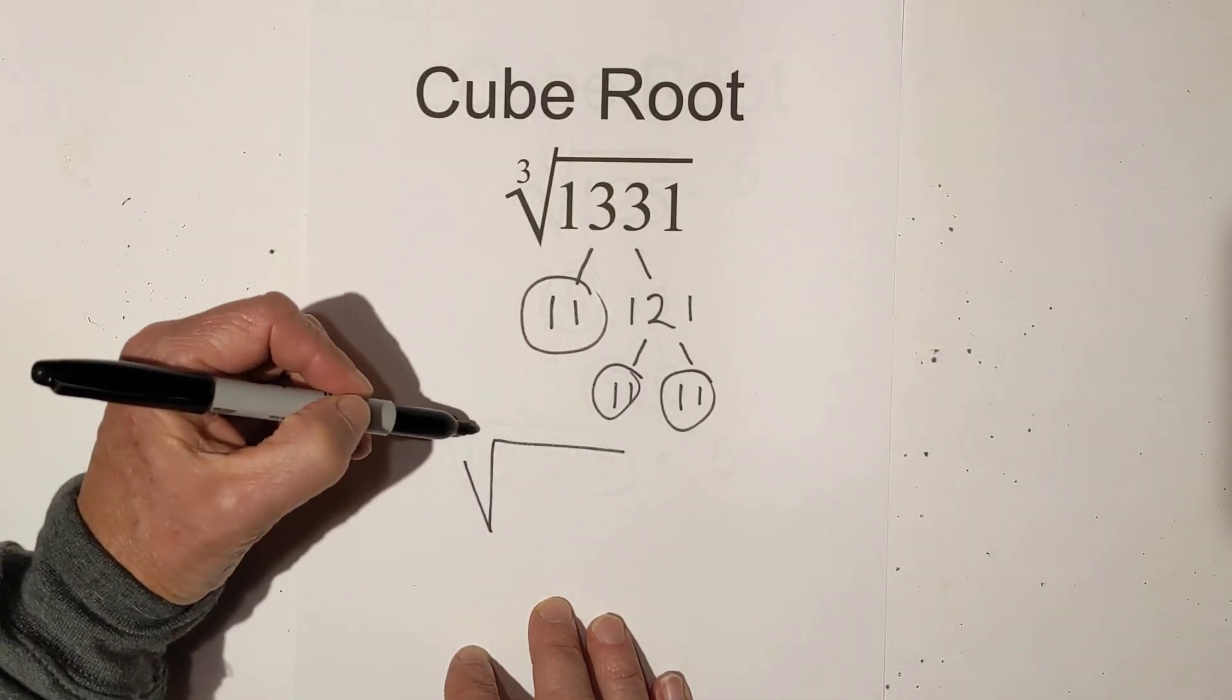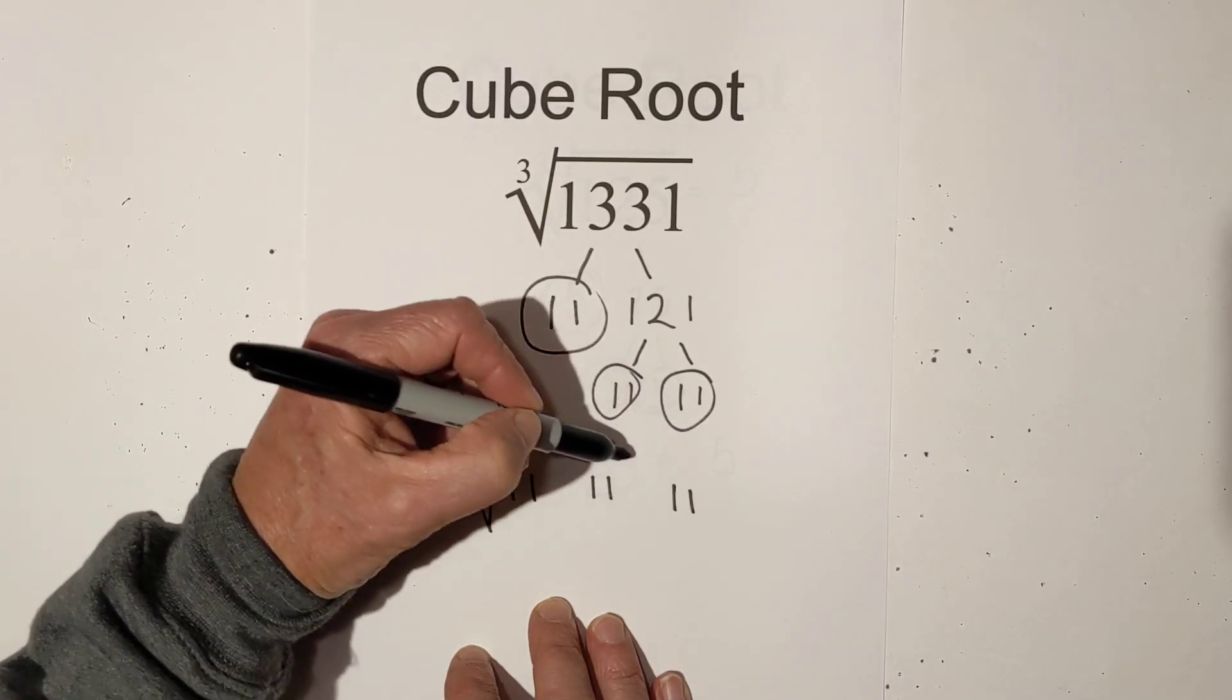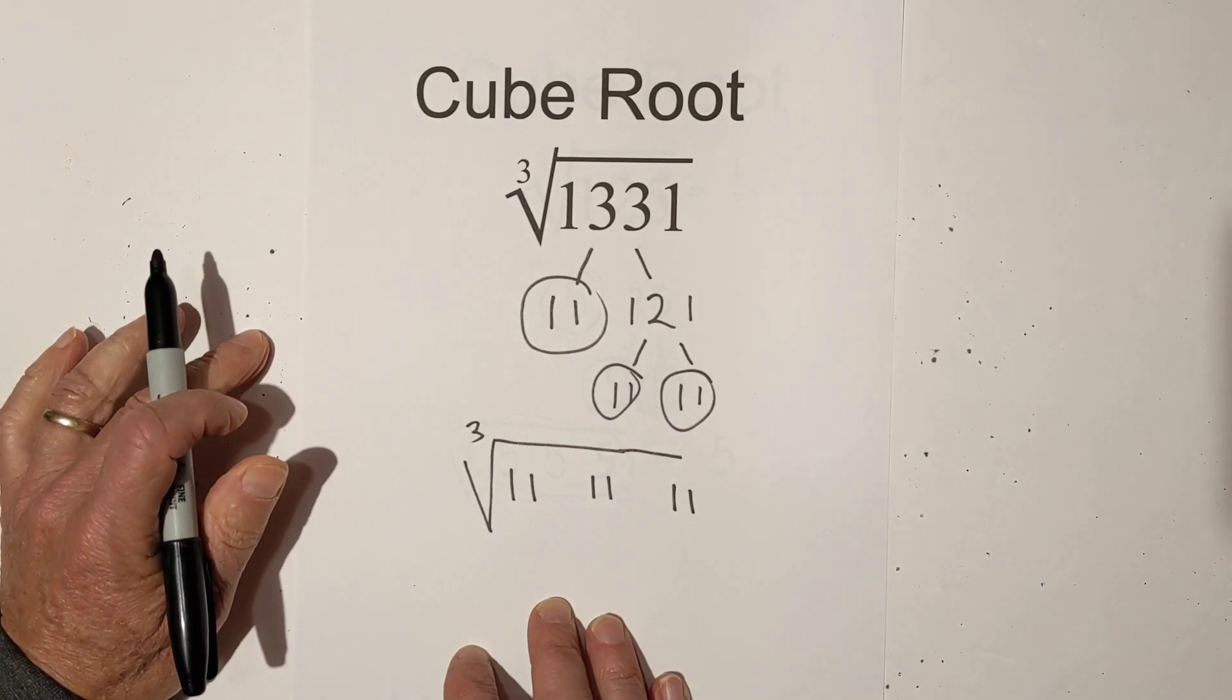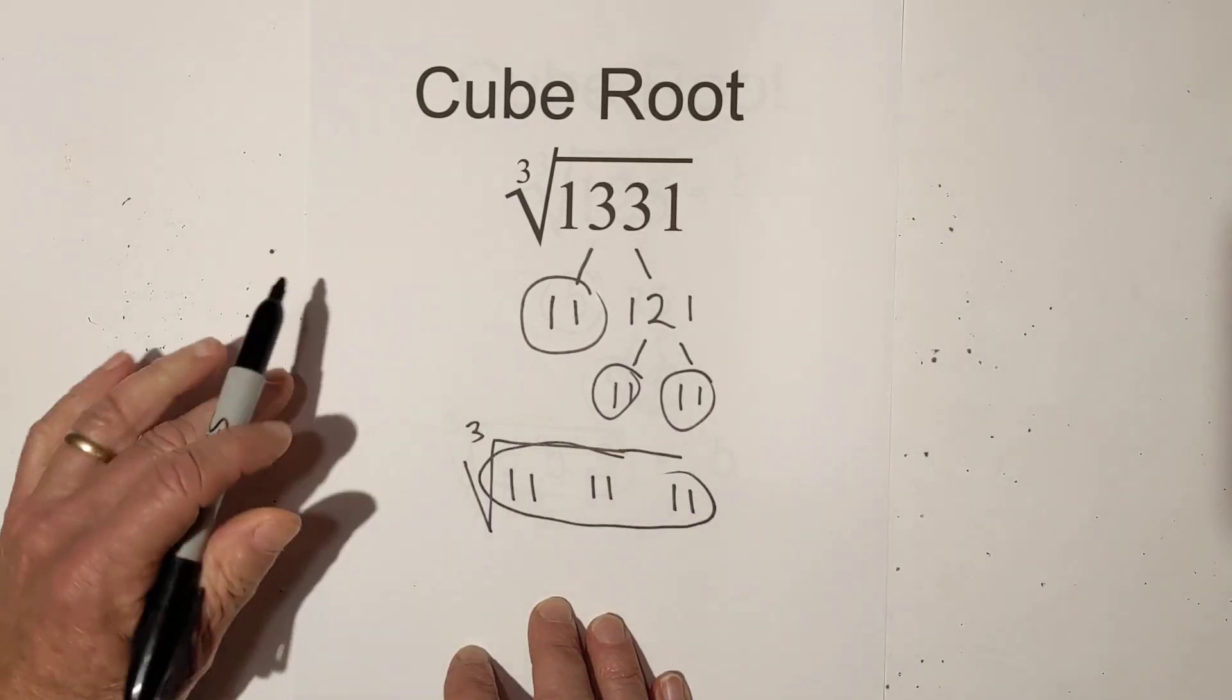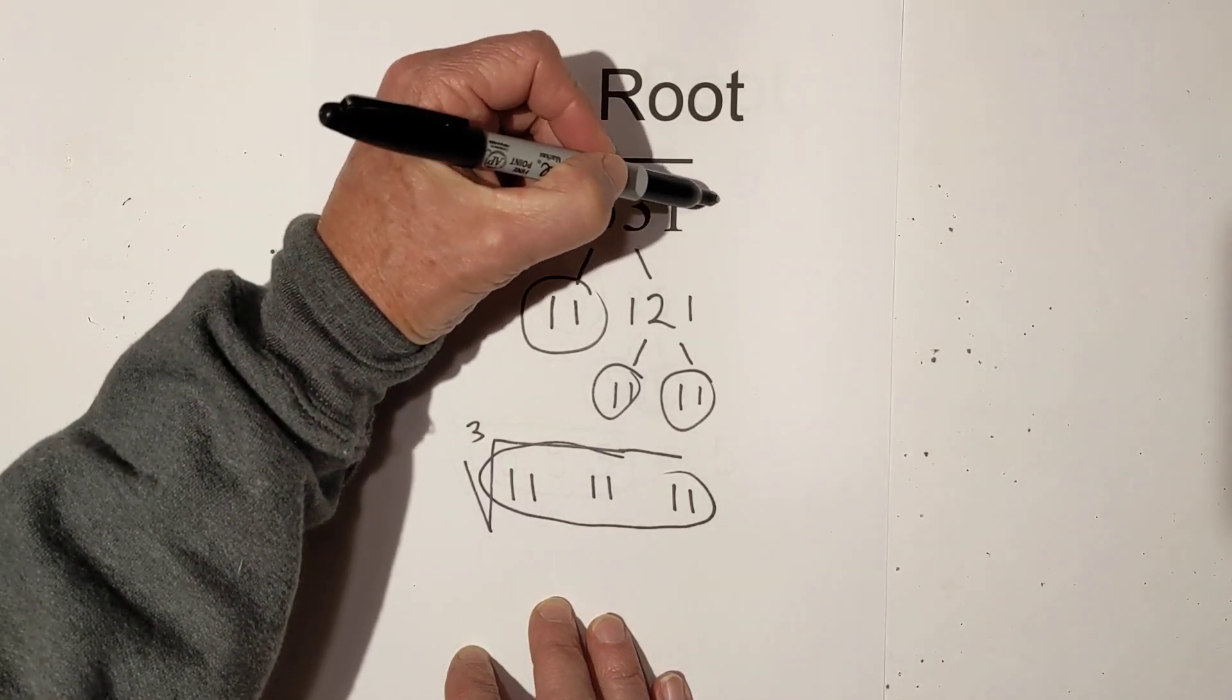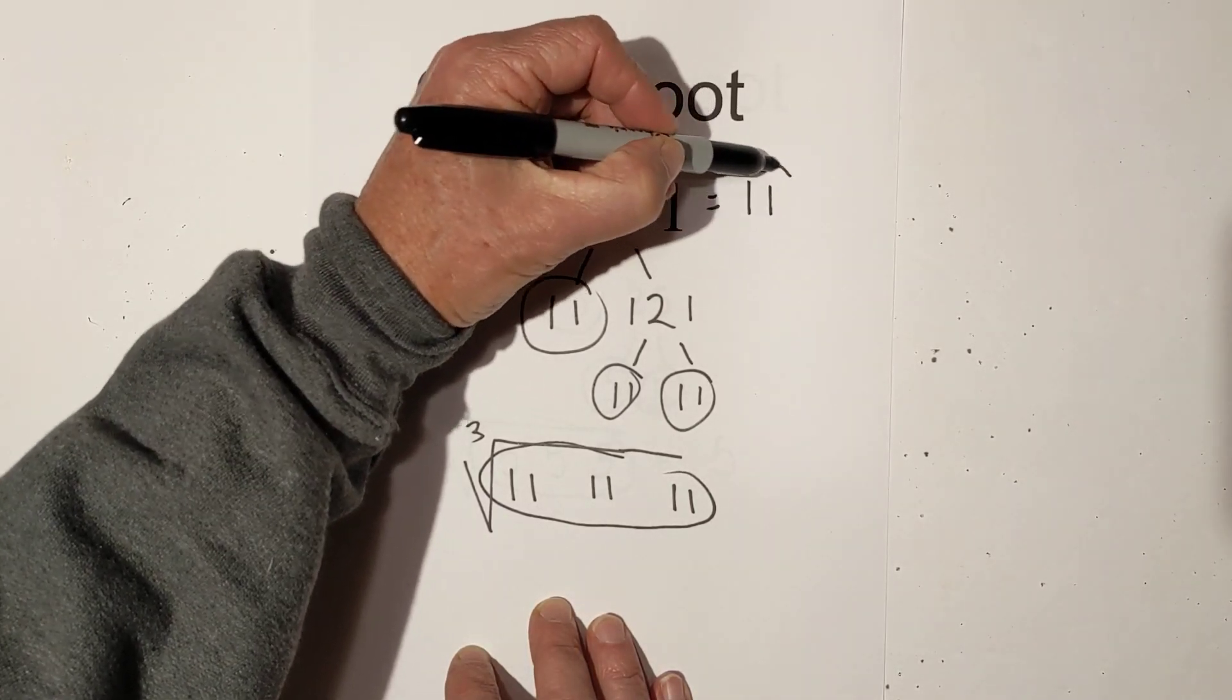Now let's put them under the cube root. We have 11 times 11 times 11. The rule is you can pull out groups of 3. So I will pull these out so the cube root of 1331 is 11.